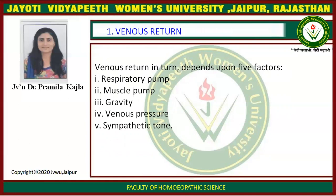First, venous return. Venous return means blood supply to the heart from the systemic circulation. It depends upon five factors: first is respiratory pump, second is muscle pump, third is gravity, fourth is venous pressure, and fifth is sympathetic tone.